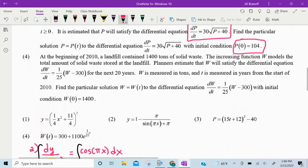And finally, number 4. At the beginning of 2010, a landfill contained 1,400 tons of solid waste. The increasing function W models the total amount of solid waste stored at the landfill. Planners estimate that W will satisfy the differential equation dw dt is 1 25th times W minus 300 for the next 20 years. W is measured in tons. T is measured in years from the start of 2010. Find the particular solution W equals W of T to the differential equation with initial condition W of 0 equals 1,400.